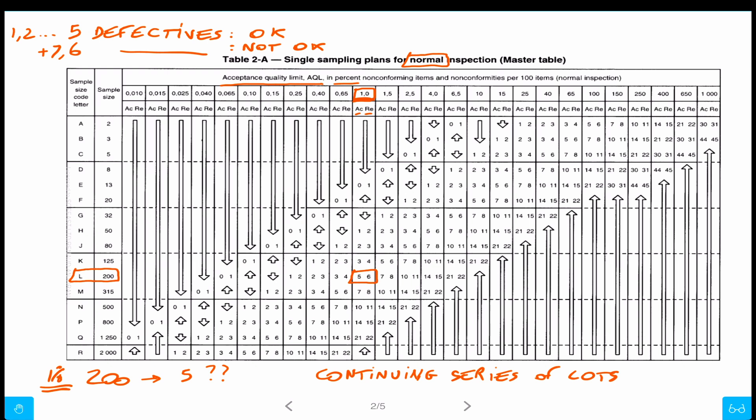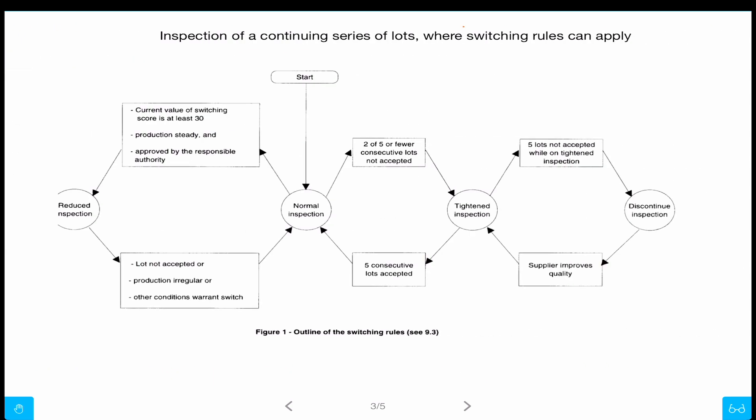Now, it also includes switching rules. Switching rules are very important actually. When it was a military standard 105 of the U.S. Army, the main differences between the different versions were about these switching rules. So this is very important. You start at normal severity.